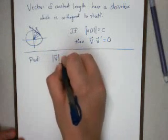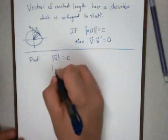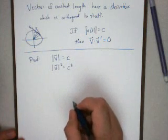If the vector has constant length, then the length is constant. Square both sides. I end up with v squared equals c squared.